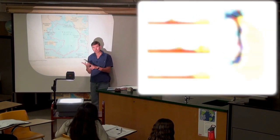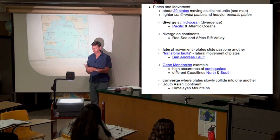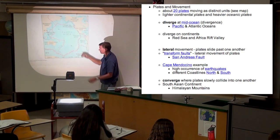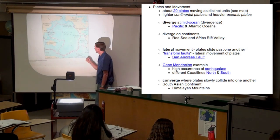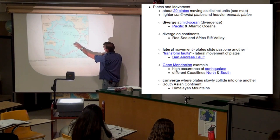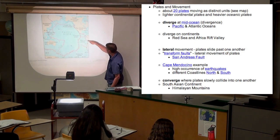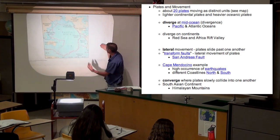To review the directions that plates can go: one is that they can spread apart — out here in the Pacific Ocean, that's called divergence. Two, they can come together. Right over here it's spreading apart and then being subducted — this is convergence, where the Nazca plate is hitting the South American plate and being subducted.